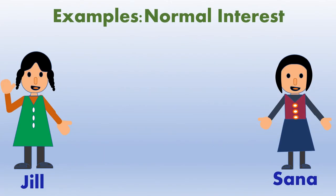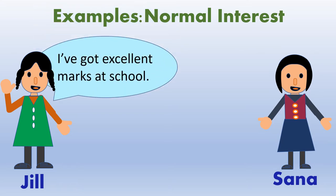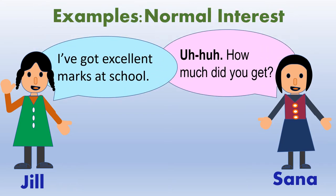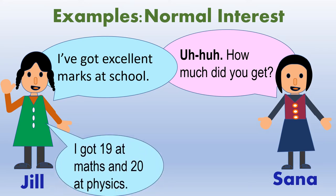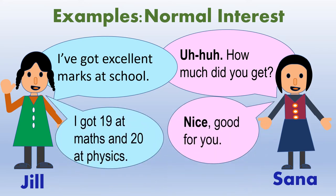Normal interest — Listen and practice. A: I've got excellent marks at school. B: Oh! How much did you get? A: I got 19 at maths and 20 at physics. B: Nice. Good for you.